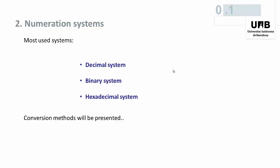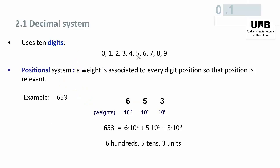Among the data processed by computers, an essential type is constituted by numbers. How can we represent numbers and perform arithmetic operations with only two digits, zero and one? We already know the decimal system, and we are going to define the binary and the hexadecimal systems. First, some comments about our traditional numeration system: the decimal system.